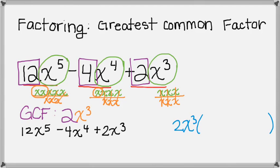And then in the parentheses going to be the leftovers after I divide all my terms by the greatest common factor. So I can do 12x to the 5th divided by 2x cubed. So 12 divided by 2 is 6. So I'm going to write 6 over in my parentheses. x to the 5th divided by x cubed is x squared.